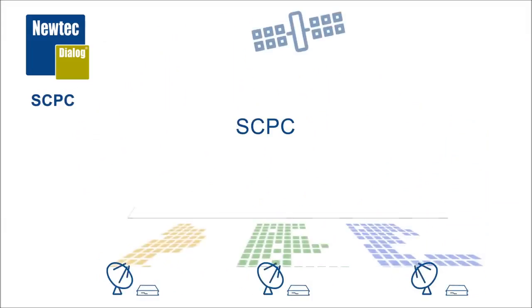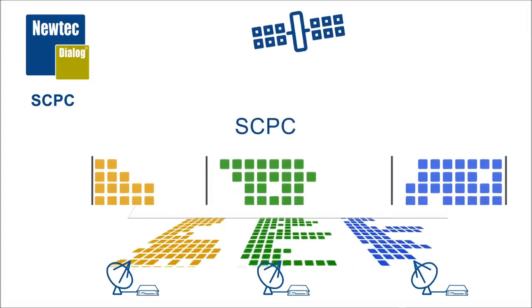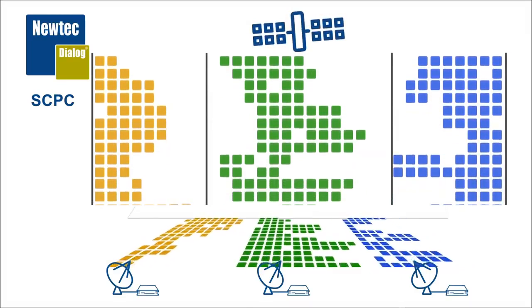Now what SCPC is all about is pretty straightforward, and the first thing we see is that despite the amount of traffic that needs to be sent, the bandwidth allocation is fixed.